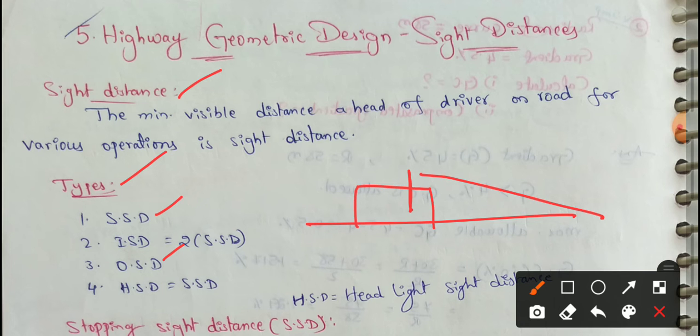SSD means Stopping Sight Distance. If you have driver on the road, the driver's eye point, the height is 1.2 meter as per IRC. Driver eye sight from the road surface, the height is 1.2 meter as per IRC.